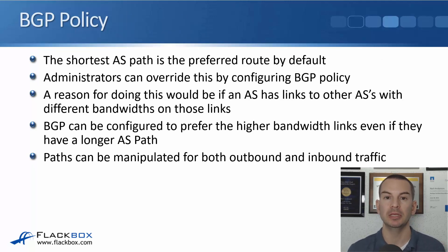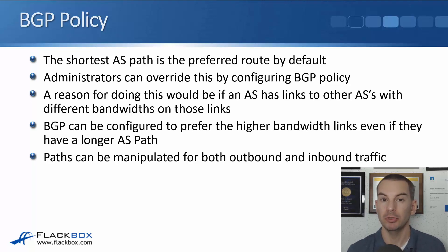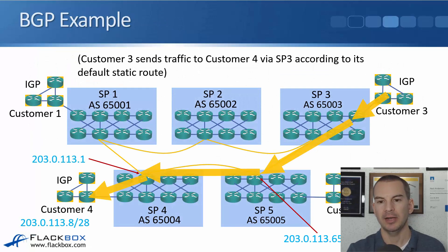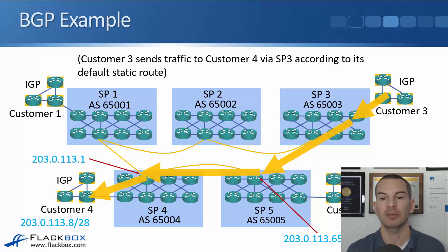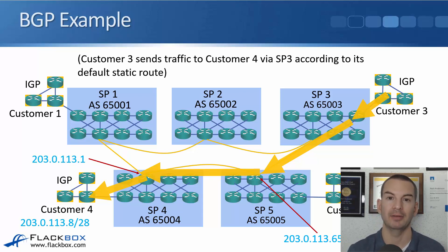BGP policy allows you to override the default shortest AS path preference. For example, if you're SP3 and the top path through SP2 has higher bandwidth than the shorter path through SP5, you can configure BGP policy to influence path selection and force traffic via the higher-bandwidth top path rather than the default shorter AS path.